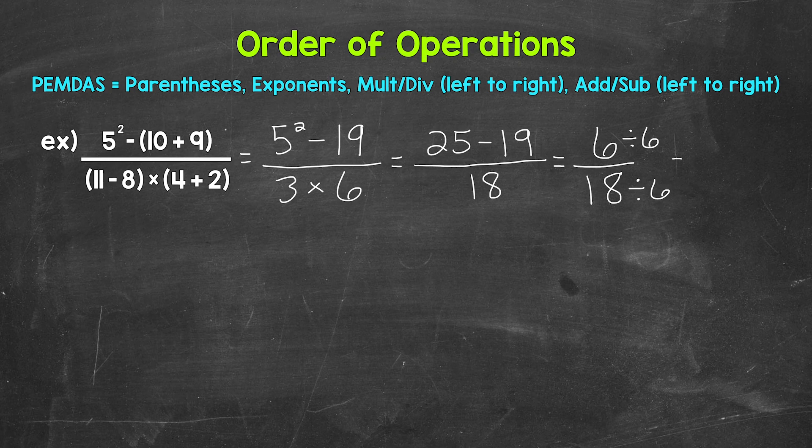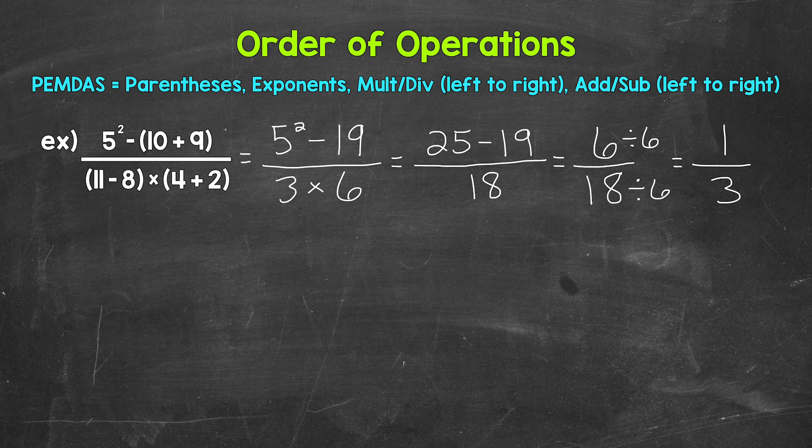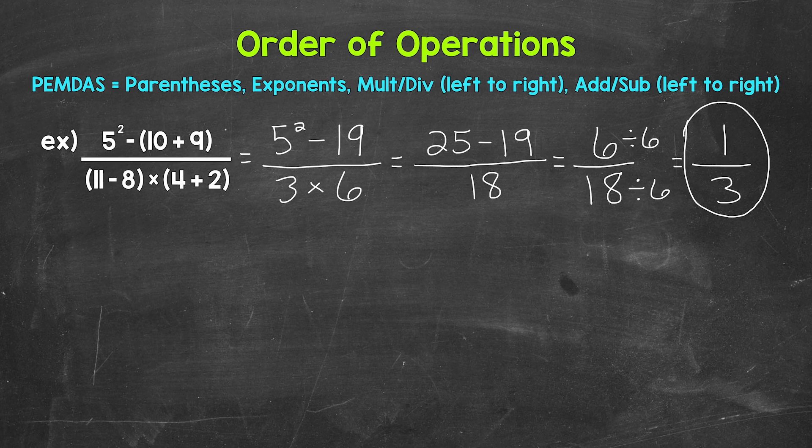So 6 divided by 6 gives us 1. And then 18 divided by 6 gives us 3. And we end up with 1 third. The only common factor between 1 and 3 is 1. So this is in simplest form.